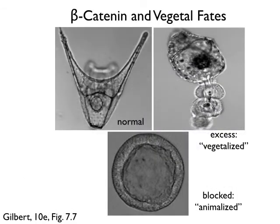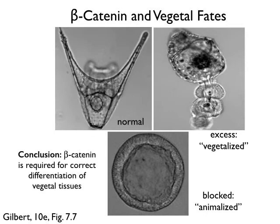Looking at the terminal phenotypes: a normal pluteus is the control. An embryo with over-expressed beta-catenin — excess nuclear beta-catenin — produces a vast excess of mesoderm and a giant gut on the outside, a vegetalized embryo much like the vegetal fragments Herstadius had identified. Conversely, an embryo with much less nuclear beta-catenin converts almost all of the embryo to ectoderm, producing a permanent blastula that looks a lot like Herstadius's dauer blastulae. The conclusion is that beta-catenin is required for correct differentiation of vegetal tissues.